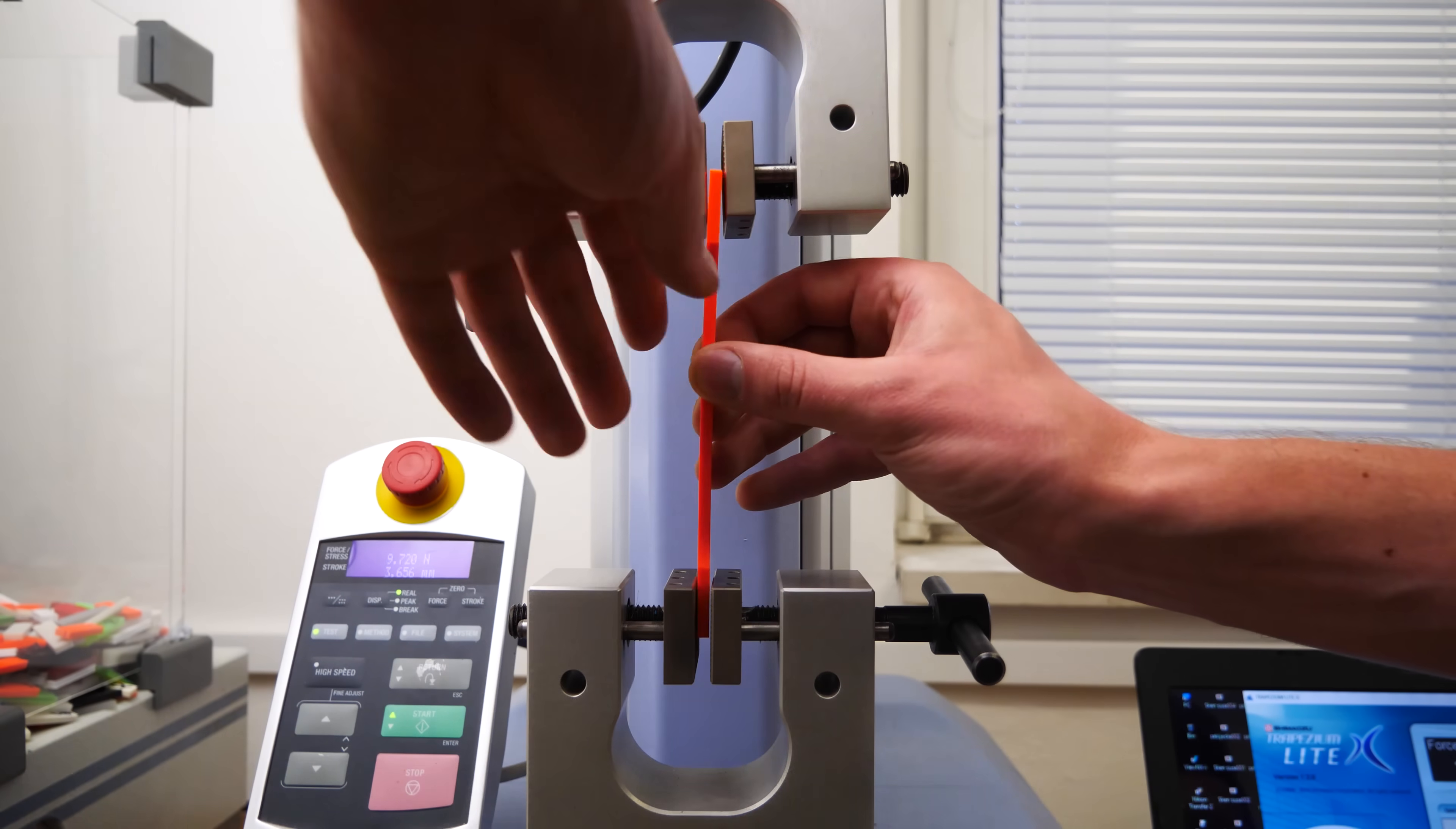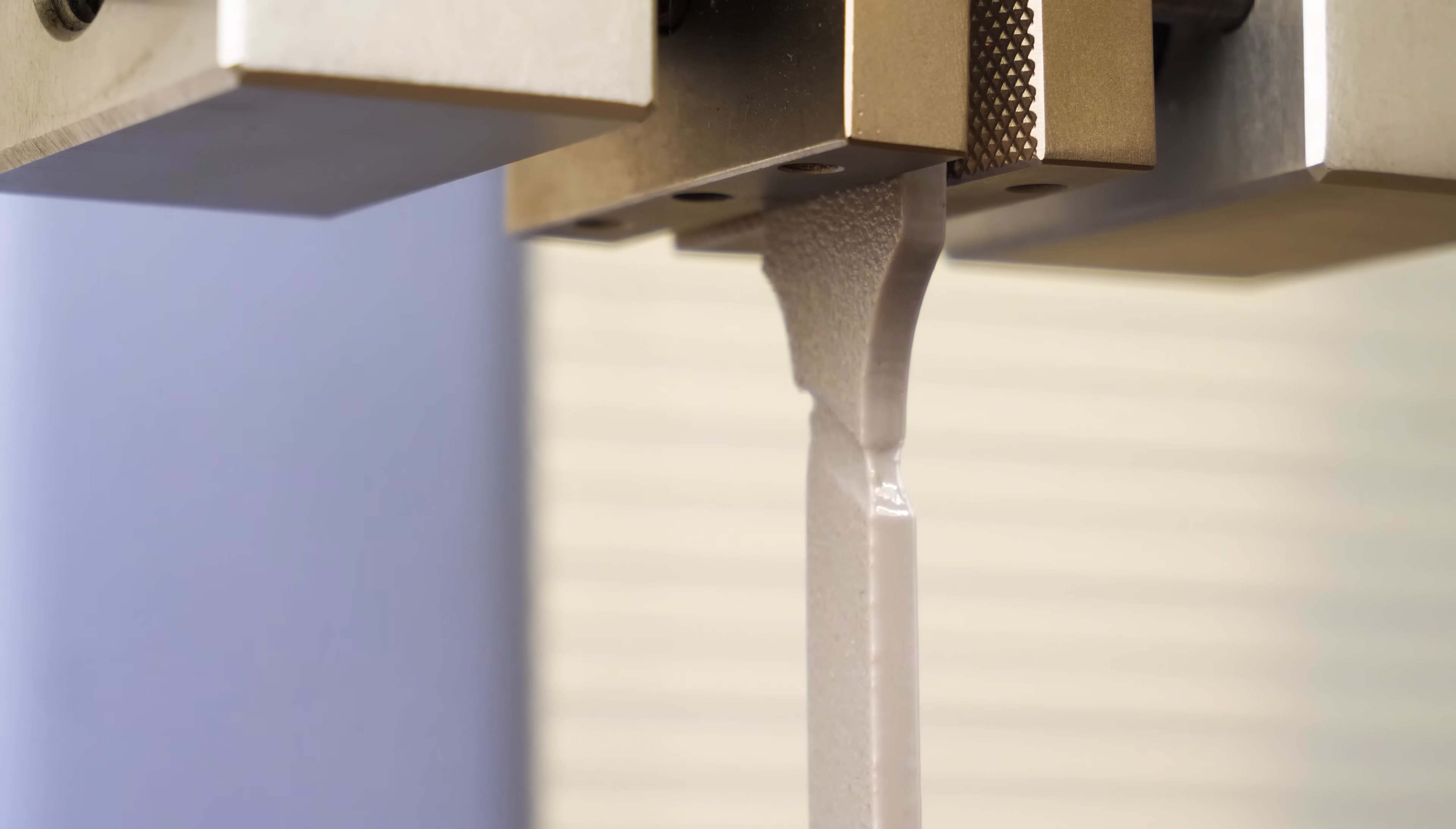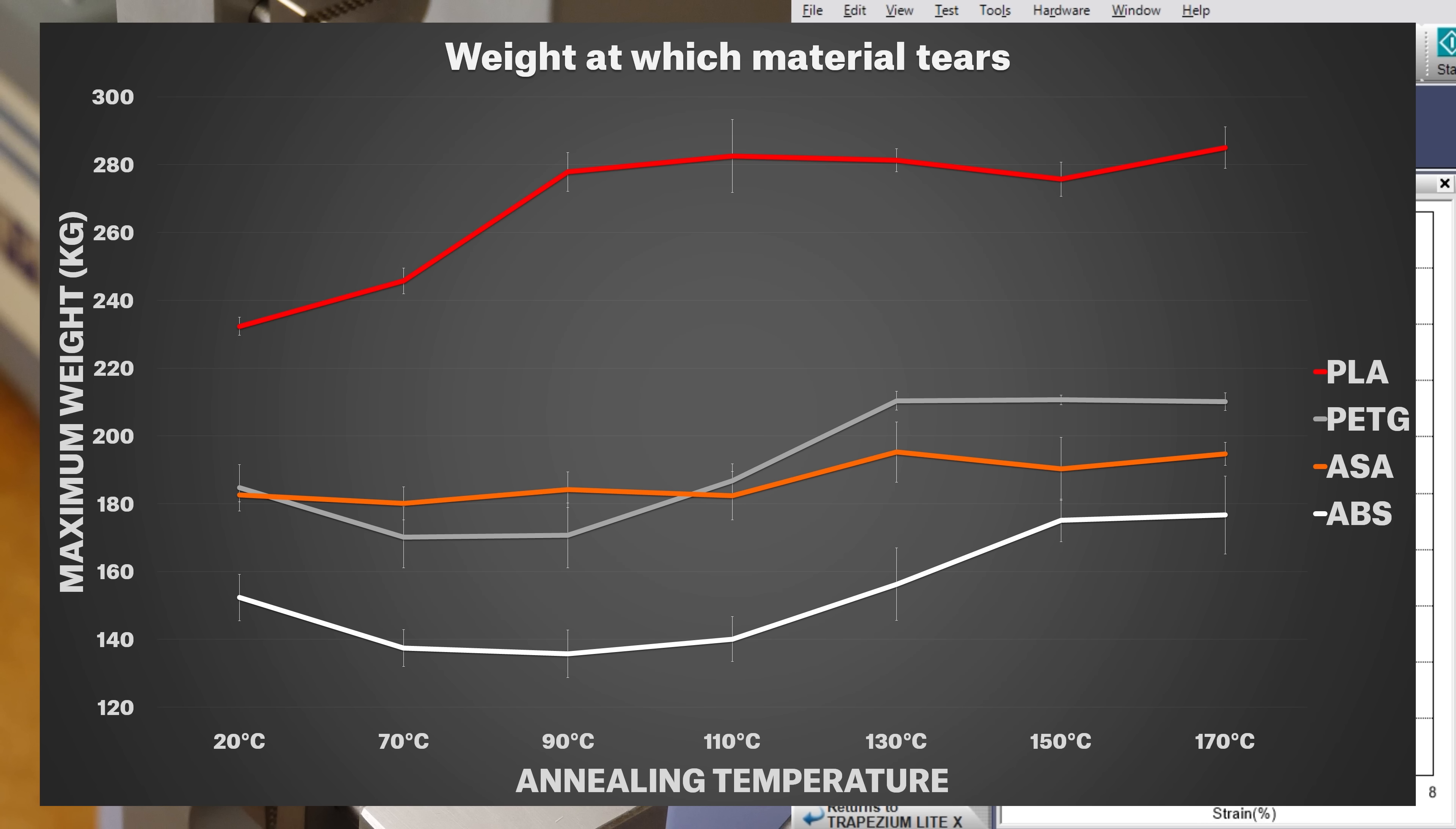In the third test, we focused on evaluating the tensile strength required to break our testing samples. We printed five samples for each combination of material and temperature and averaged the values. The results were rather surprising. PLA left its competitors far behind, with PETG annealed at 110 degrees Celsius in the second place.